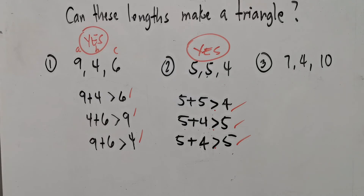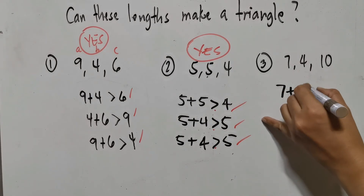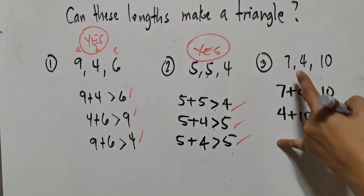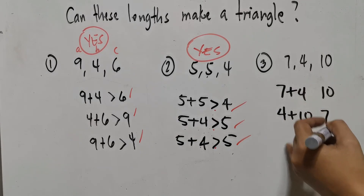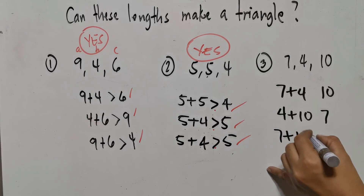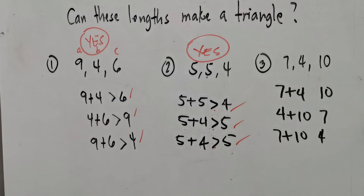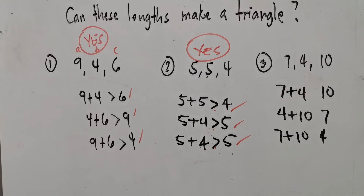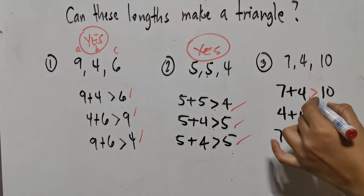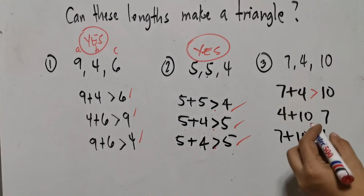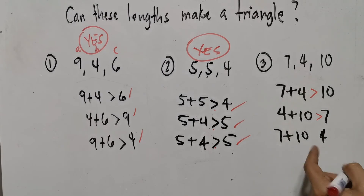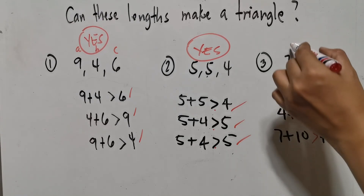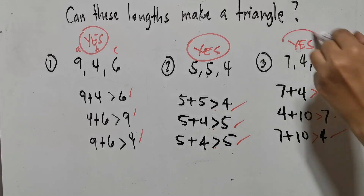For the third given, we have 7, 4, and 10. So: 7 plus 4 is 11 compared to 10 — greater than. Then 4 plus 10 is 14 — greater than 7. And 7 plus 10 is 17 compared to 4 — also greater than. The condition is satisfied, so this measurement can make a triangle.